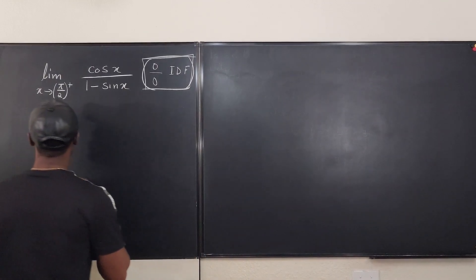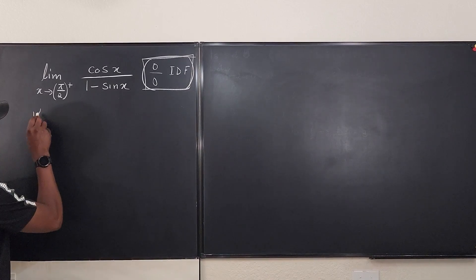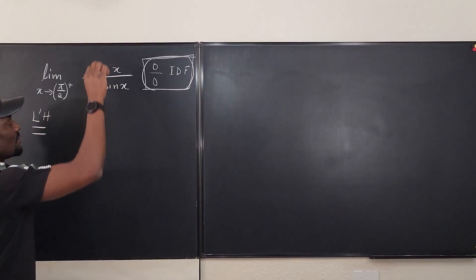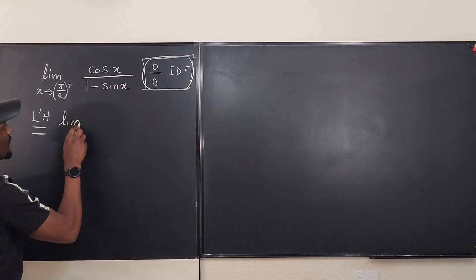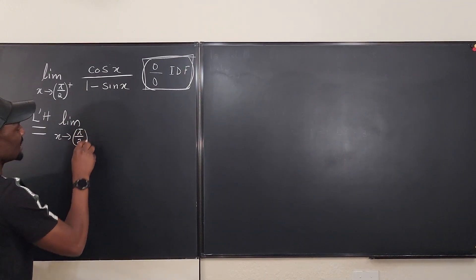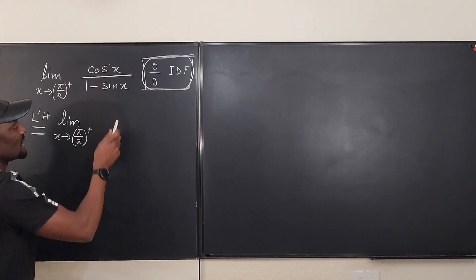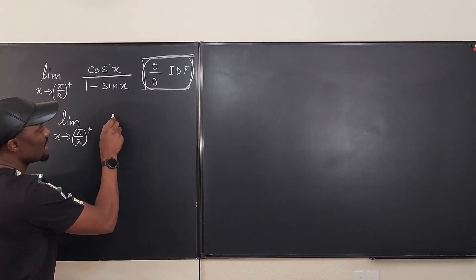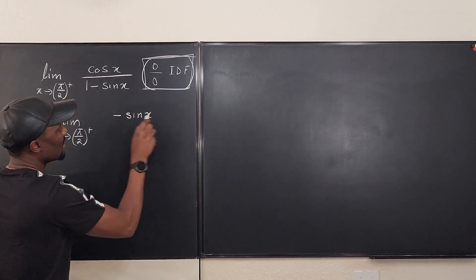Now by L'Hopital's rule, we know that this expression by L'Hopital's rule is going to be the derivative of the numerator. The limit as x goes to pi over 2 from the right, the derivative of cosine x is negative sine x. Nice.